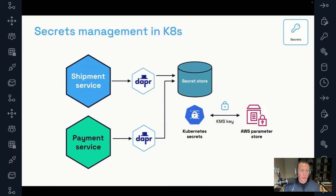For secrets management, managing sensitive information such as API keys, database credentials, and external service secrets was a significant challenge. We initially relied on environment variables and manual processes for rotation and security. With Dapr, we centralized our secret management by integrating with Kubernetes secret store. Using Dapr's secret API, this approach has not only enhanced security but also reduced operational risk. Additionally, we transitioned from manually passing a secrets YAML file to storing our secrets in AWS Parameter Store and encrypting them with a KMS key. We then use an open source project called External Secrets to synchronize production secrets to the Kubernetes cluster and development secrets to the development cluster, streamlining the entire process.